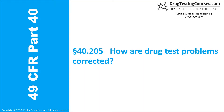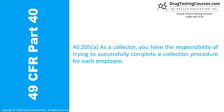Section 40.205: How are drug test problems corrected? 40.205A. As a collector, you have the responsibility of trying to successfully complete a collection procedure for each employee.